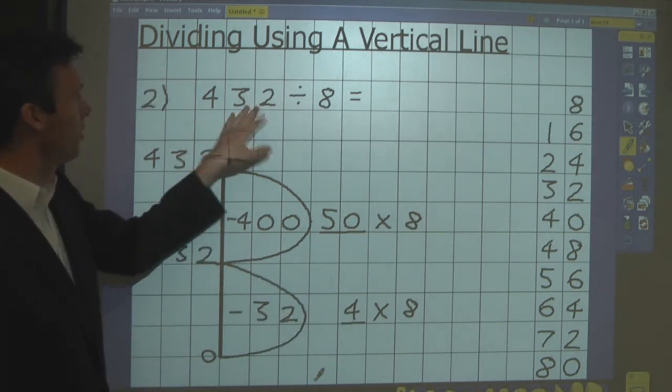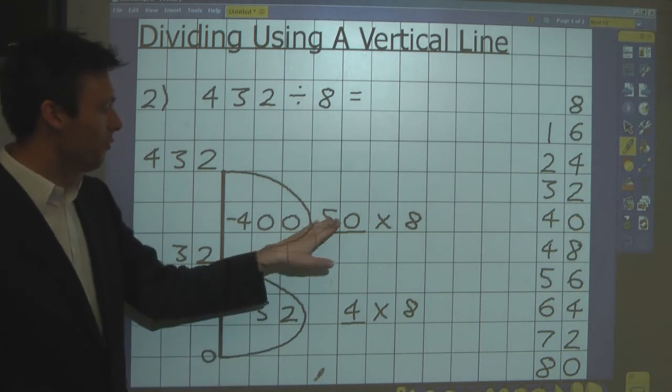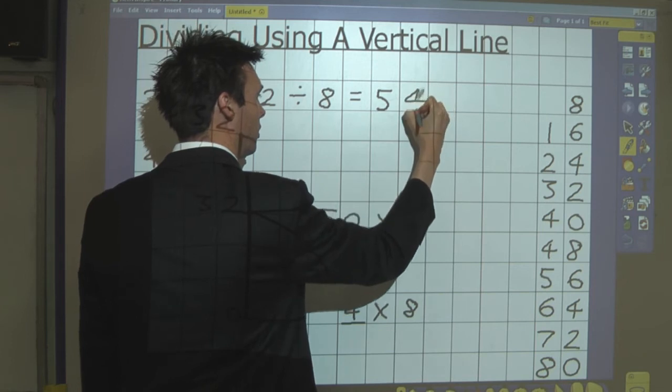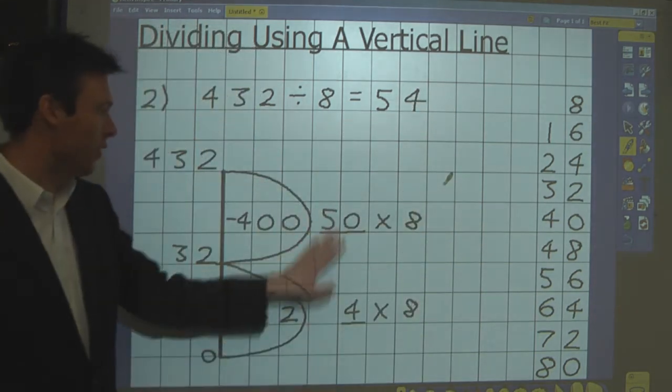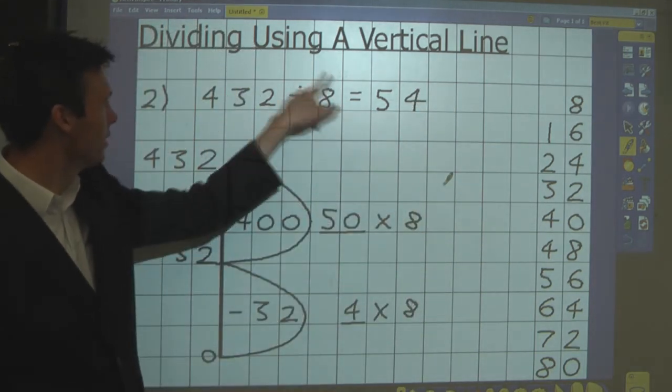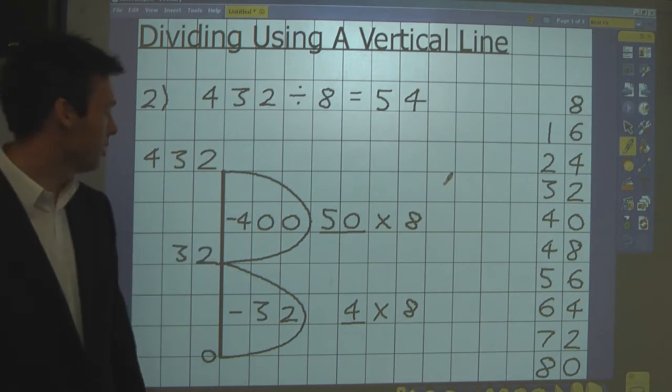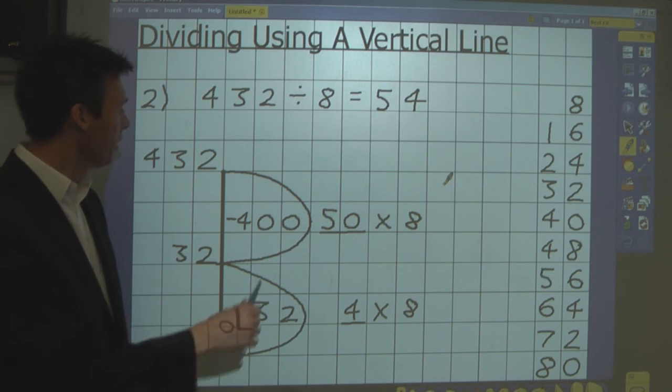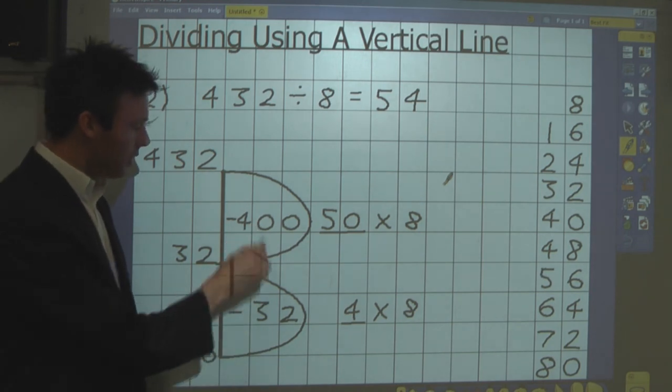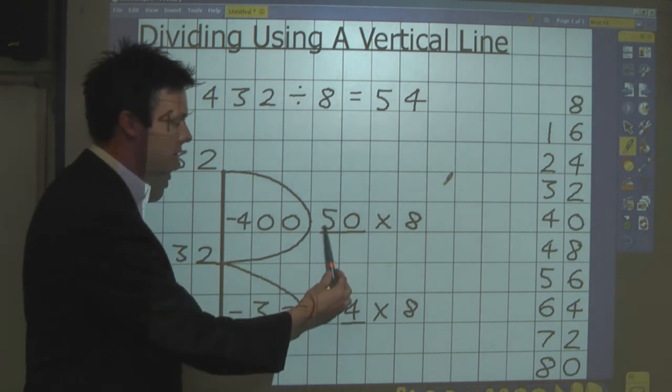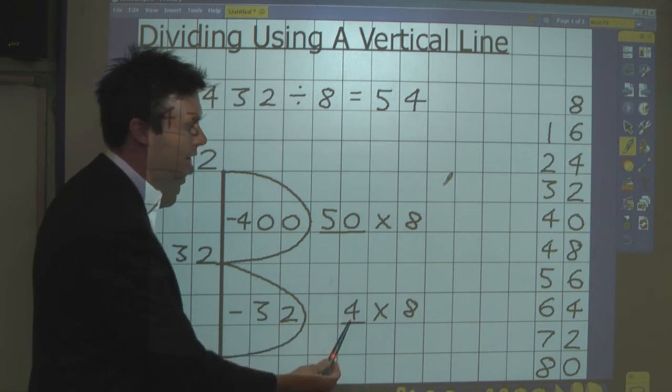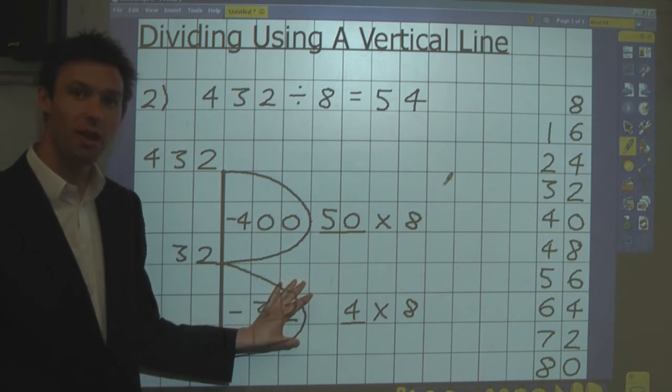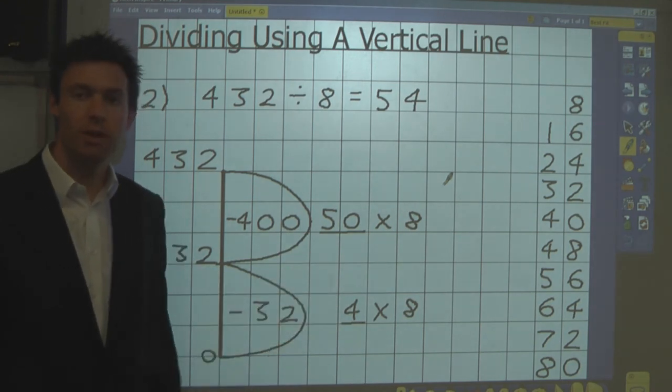So therefore, 432 divided by 8 will be 54. So the inverse of that is 54 lots of 8 will give me 432. That's how I divide on a vertical number line. Just note the number you take away goes inside the bubble, and the lots of number is underlined. And you'll see from the next clip how this intermediate stage leads on very nicely to the long division method, which we call chunking.